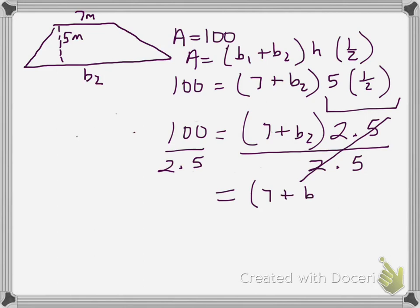7 plus base 2. Now, over on the other side, 100 divided by 2 and 5 tenths. You could work that out with some long division. I'd recommend a calculator. And you'll get 40.